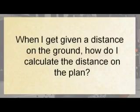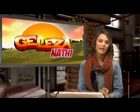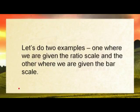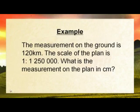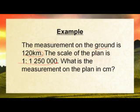What did you say? When I get given the distance on the ground, how do I calculate the distance on the plan? Thank you for your question. When given a distance on the ground, how do I calculate the distance on a plane? Let's look at that. We can do two examples — one where we are given the ratio scale and the other where we are given the bar scale. The measurement on the ground is 120 kilometers. The scale of the plan is 1 to 1,250,000. What is the measurement on the plan in centimeters?